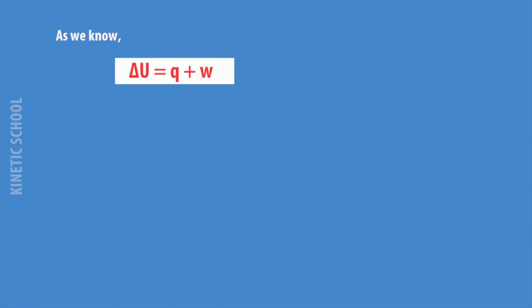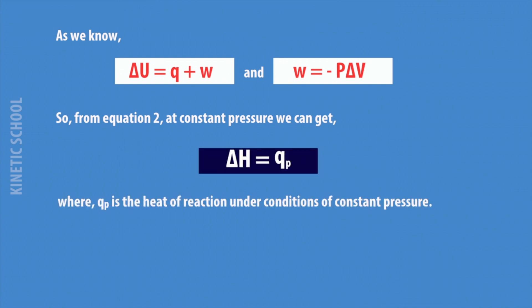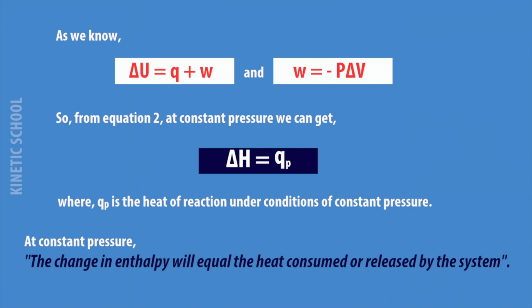As we already know, delta U equals Q plus W, and work W equals minus P times delta V. From this, at constant pressure, delta H equals Q. This means that at constant pressure, the change in enthalpy equals the heat consumed or released by the system.